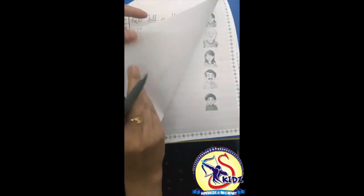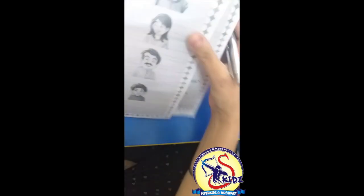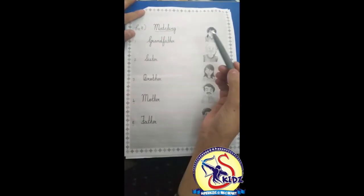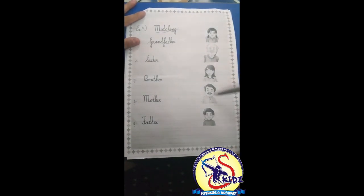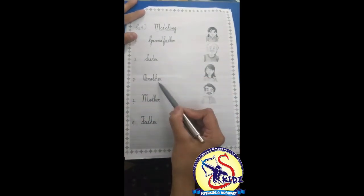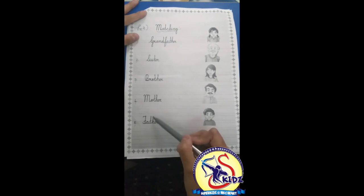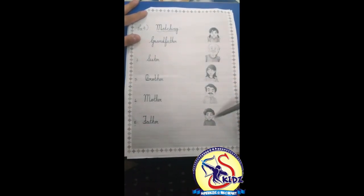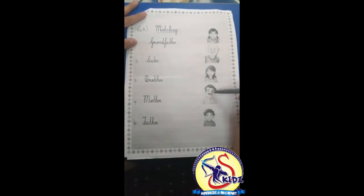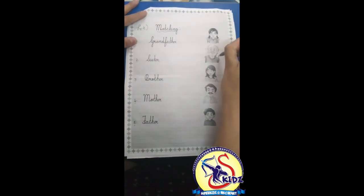Now kids, come to exercise number 4. Our exercise is matching. There are some words of family members and pictures of family members. First we will read the words: grandfather, sister, brother, mother, father. Now we will see the pictures and match. First is grandfather — we will match grandfather with the picture.